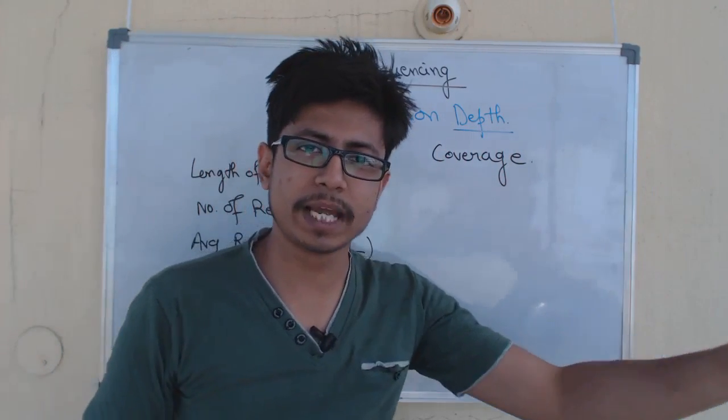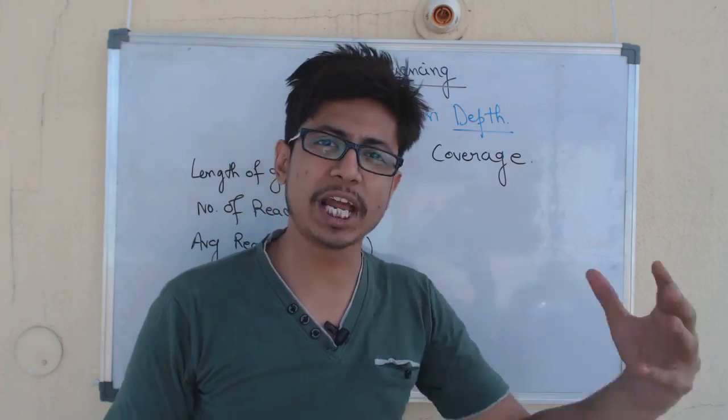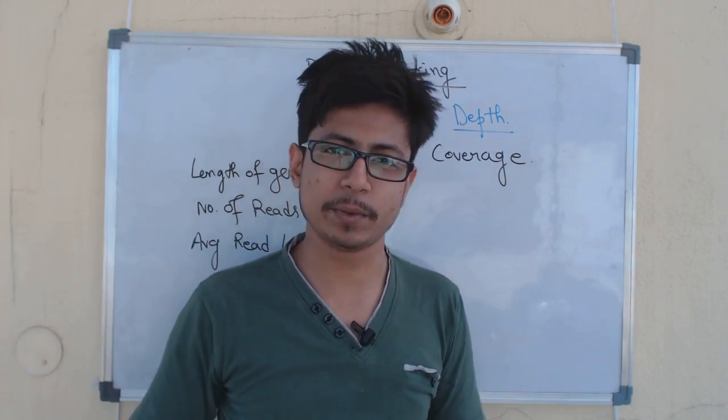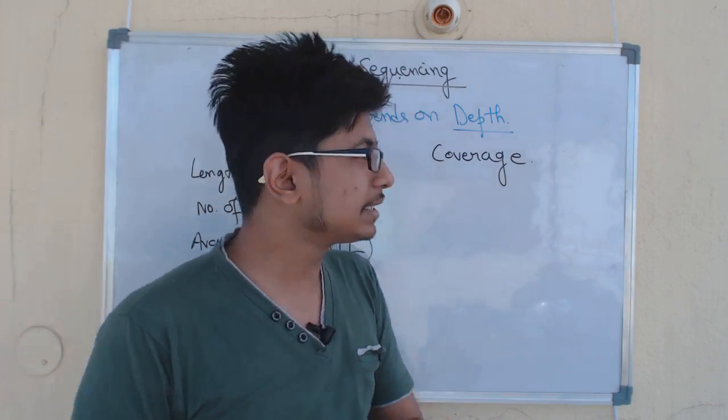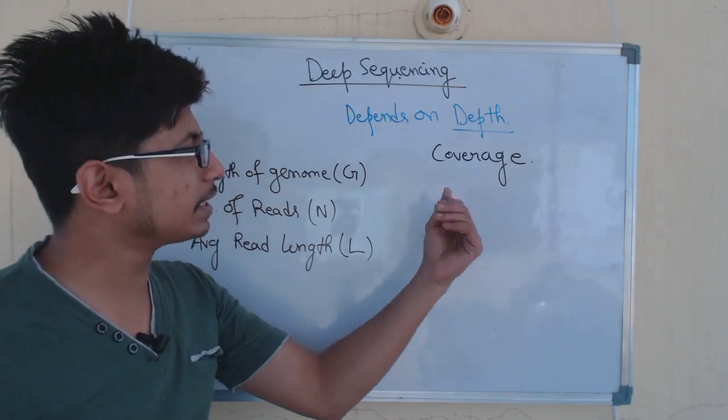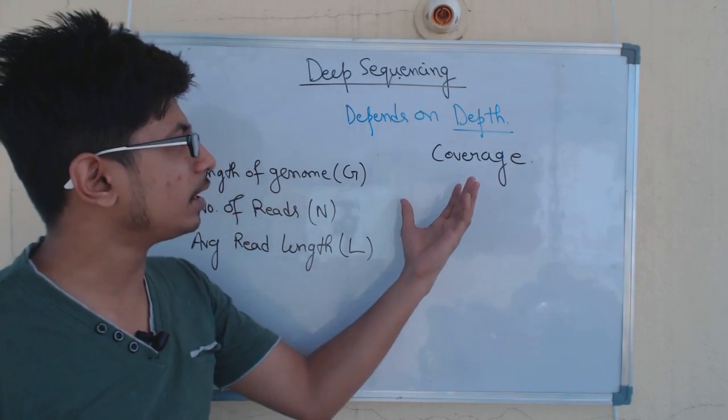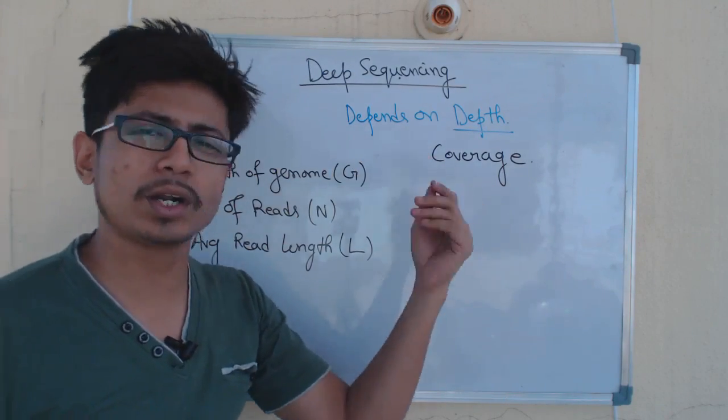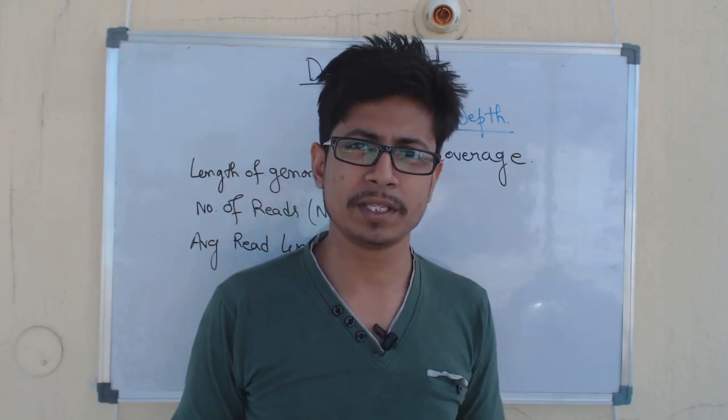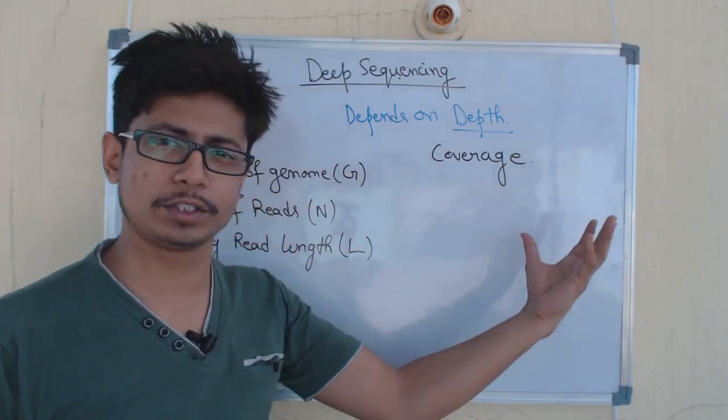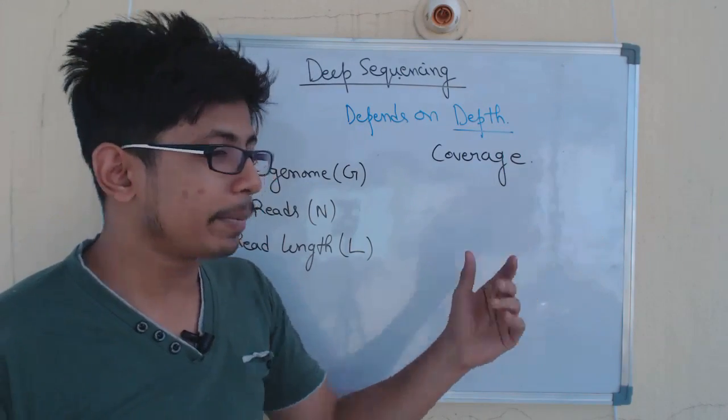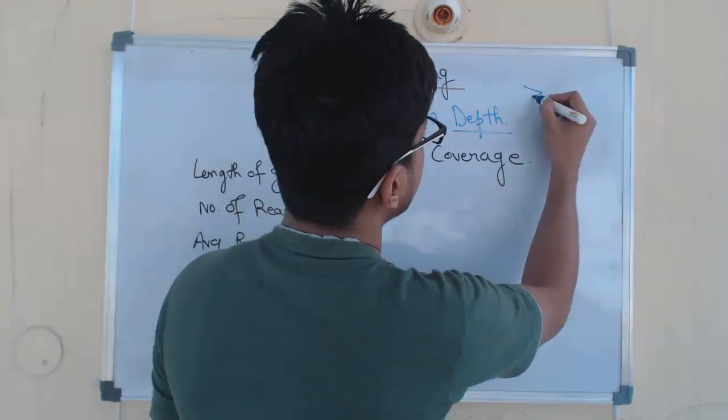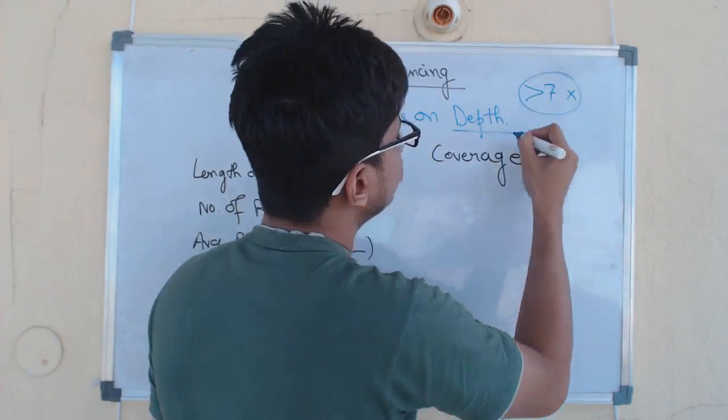Based on these two parameters—depth and coverage—we measure some types of sequencing as shallow sequencing and some types as deep sequencing. Shallow sequencing means you only take it for one, two, or less than five times. The sequencer reads through for each of those lengths of DNA.